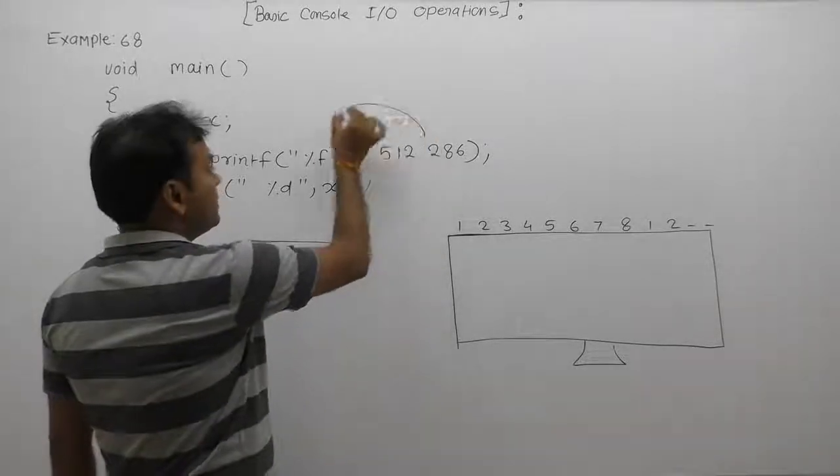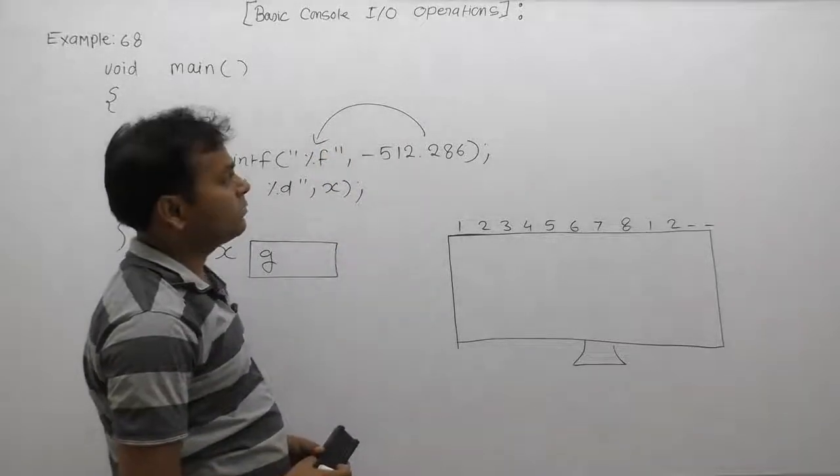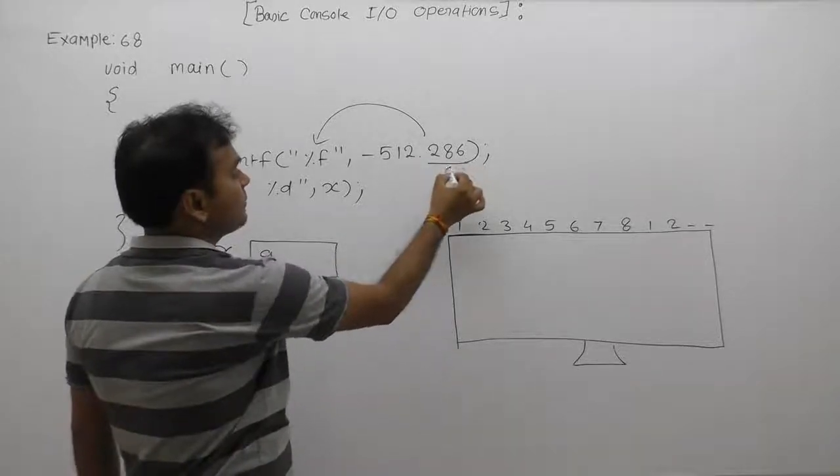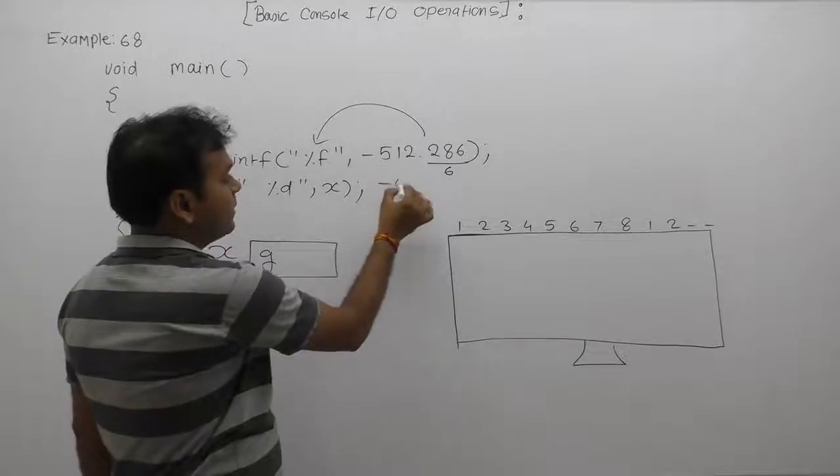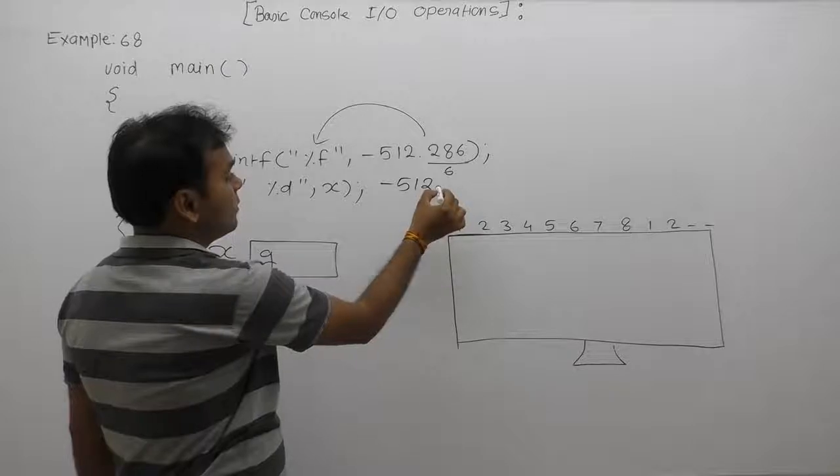The given value will be replaced in place of the format specifier percent f. As we know, in the default case, total precision value is six. According to six precision, it will be inserting, or the value becomes like that: minus 512.286 with three zeros.